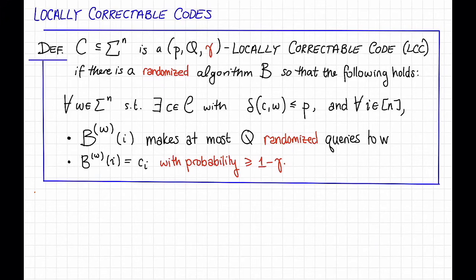More precisely, here is the actual definition of a locally correctable code. The differences are highlighted in red. We say that a code C subset of sigma to the N is a P, Q, Gamma locally correctable code, or LCC, if the following holds. We want there to be a randomized algorithm B, so that the same bunch of quantifiers for all received words W that are close to a code word C and for all positions I in N, the algorithm B has query access to W and it still makes at most Q queries, but now these queries are allowed to be randomized. And we still want B with query access to W on input I to output C sub I, the Ith symbol of the code word, but now we're going to allow ourselves some small failure probability and that failure probability is this parameter Gamma. So we want this to be the case with probability at least 1 minus Gamma over the randomness in the queries.